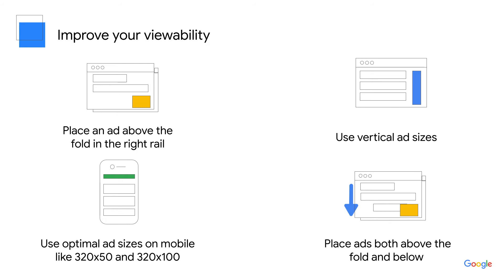There are a few things you can do to make your impressions more viewable. First, placement is key. The most viewable position for an ad is above the fold in the right-hand rail. Ad size is also important. Using ad sizes like 320 by 50 and 320 by 100 for mobile can increase engagement and viewability. But remember, if you have too many ads above the fold, you could diminish your user experience.